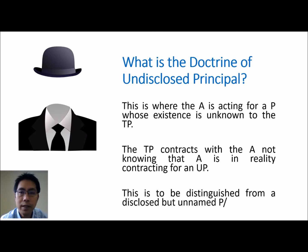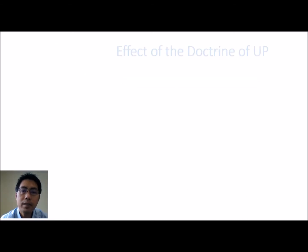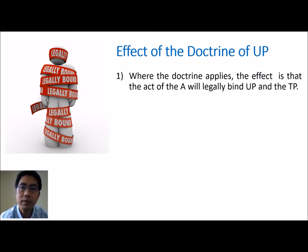Our focus for this lecture is the doctrine of undisclosed principal. The effect of the doctrine is that when it applies, the agent's act or contract will legally bind the undisclosed principal with the third party. It does not matter that the third party does not know of the existence of the undisclosed principal — because the agent was acting for someone else, that someone else will take the benefit of the contract.